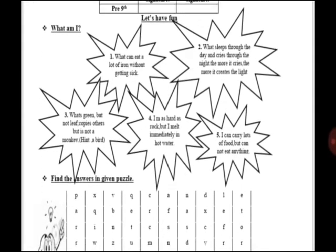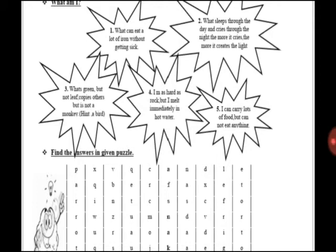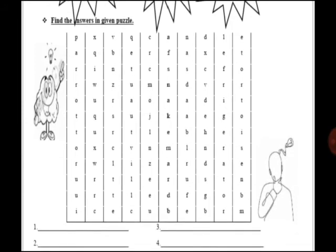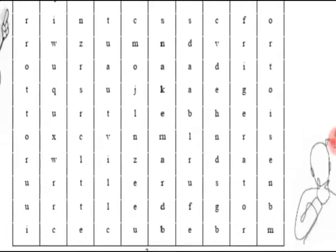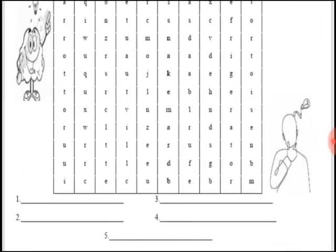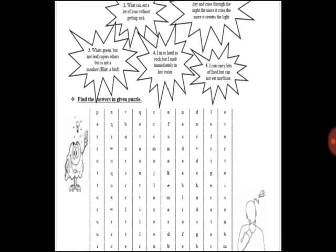This worksheet is very interesting. You can see there are five riddles written in these stars, and the answers of these riddles are given in this puzzle. You will solve these riddles by finding answers from this puzzle and write those answers in these blanks. For example, in the first riddle, what can eat a lot of iron without getting sick? You will find its answer in the puzzle box. If you see, what is it? It's rust - R-U-S-T. So you will place rust in the first blank. Similarly, you will solve the other riddles and put these answers in the given blanks.